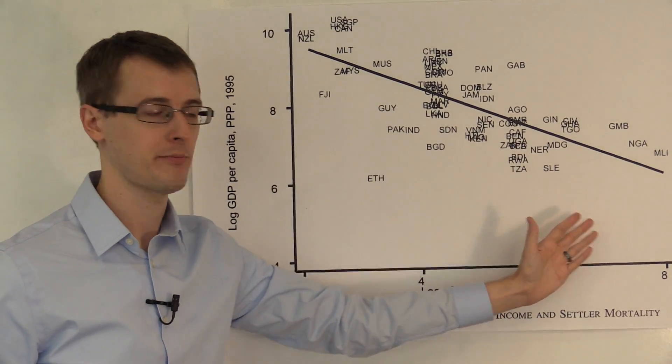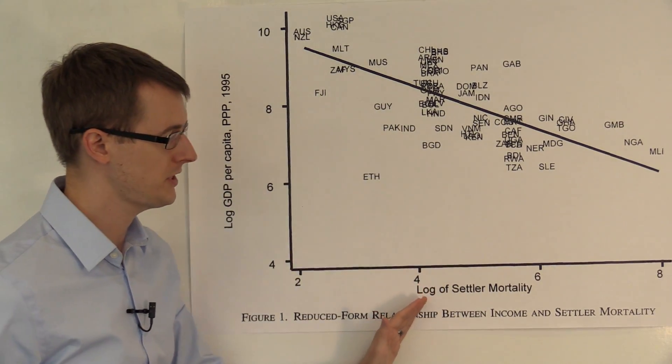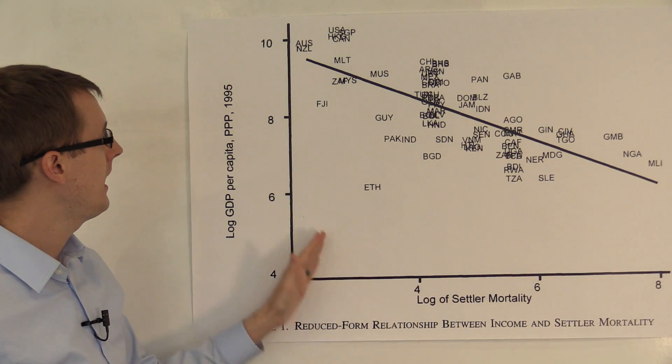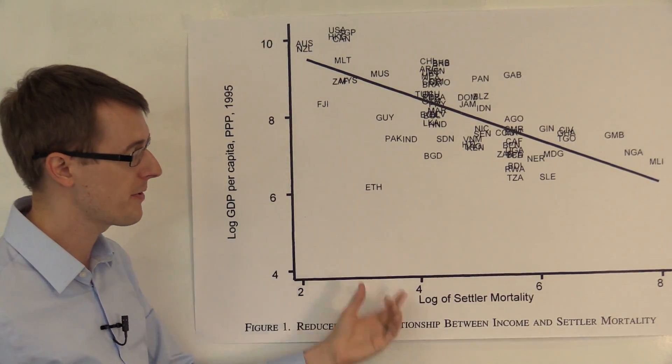And you can see there is a correlation between these two variables. Countries that have lower mortality tended to have higher GDP in 1995. And remember,